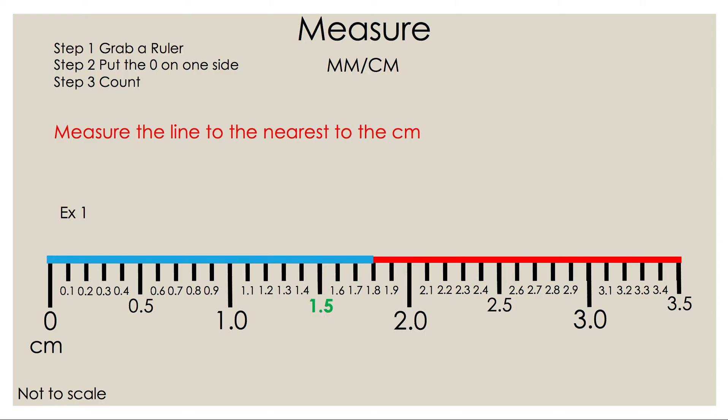We're going to pick halfway between 1 and 2 which is 1.5 and we're going to start counting. 1.6, 1.7 and 1.8 is your final answer. So when you're using a ruler with centimeters you're counting by 0.1.